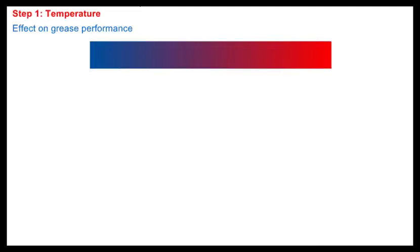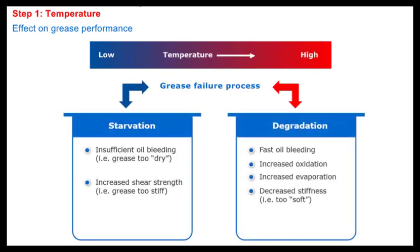A given grease has an ideal working temperature range that depends on its formulation and production process. In general, at low temperatures, greases tend to become stiffer and therefore the oil released might become insufficient and the friction increases. This phenomenon is called starvation. Inversely, at high temperatures, the oil bleeding will be increased and the oxidation process of the lubricant will be accelerated.